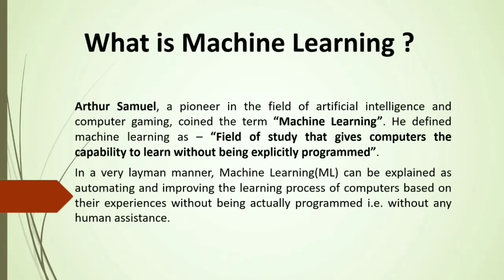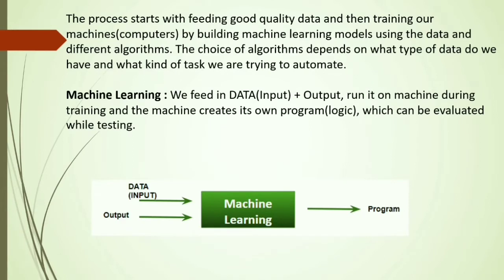According to Arthur Samuel, machine learning is the field of study that gives computers the capability to learn without being explicitly programmed. Machine learning can be defined as a process where computers learn by themselves and improvise their learning process based on the experience they get, without any human guidance. The process starts by giving data and an algorithm to the machine, where the algorithm depends on the amount of data and the task we expect it to do. According to this diagram, machine learning is given data and output as input, and it creates its own logic or program which can be evaluated while testing.